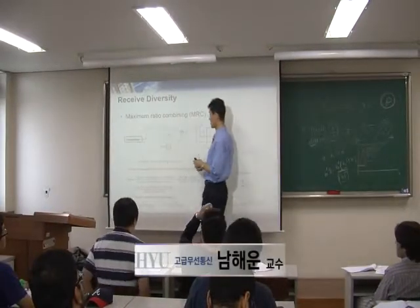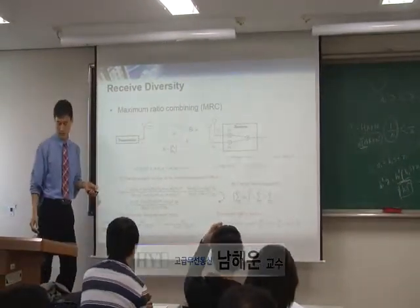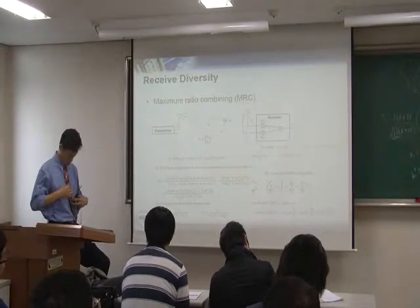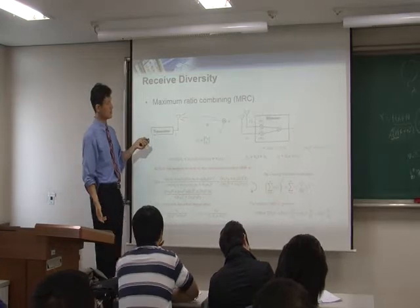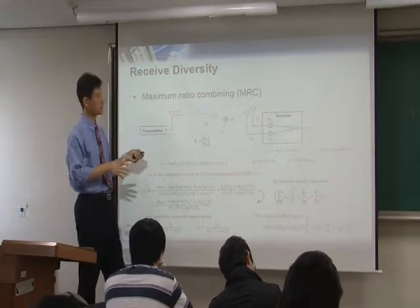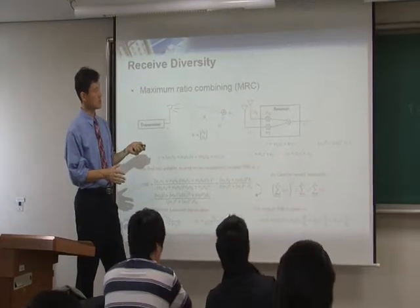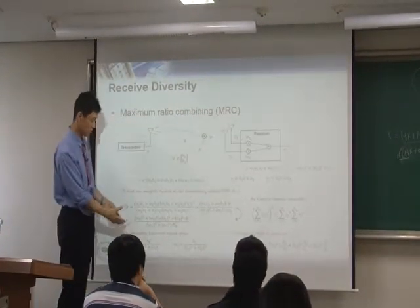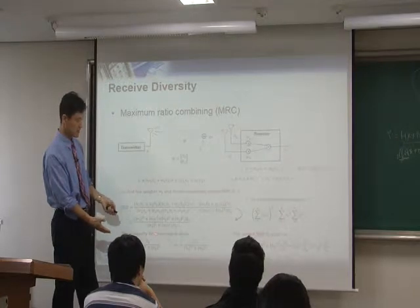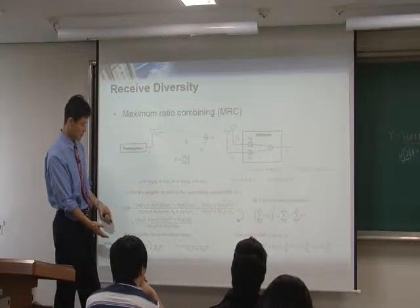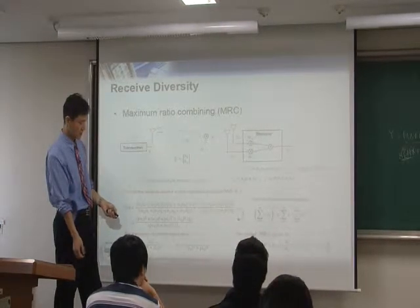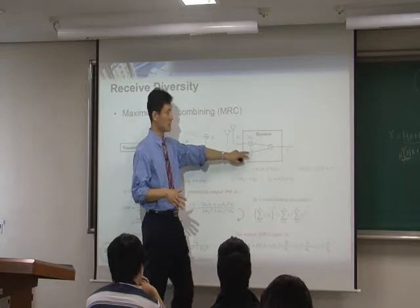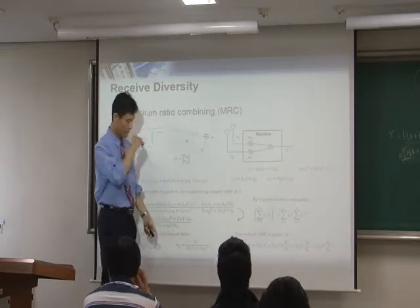The same concept is still there. As we multiplied H Hermitian at the MIMO, here we multiply H1 complex conjugate and H2 complex conjugate. That's the solution — these equations prove that W1 equals H1 complex conjugate, W2 equals H2 complex conjugate. That is the optimum solution for this gain, and that maximizes the SNR at the output.